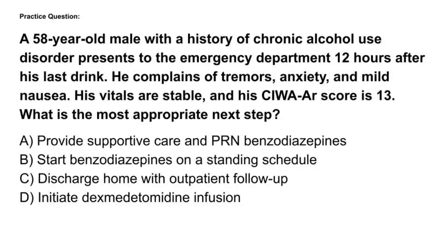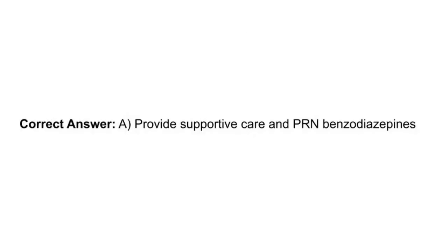A 58-year-old male with chronic alcohol use disorder presents 12 hours after his last drink with tremors, anxiety, and mild nausea. Vitals are stable and his CIWA score is 13. What is the most appropriate next step? A. Provide supportive care and PRN benzodiazepines. B. Start benzodiazepines on a standing schedule. C. Discharge home without follow-up. D. Initiate dexmedetomidine infusion. The correct answer is A — provide supportive care and PRN benzodiazepines.